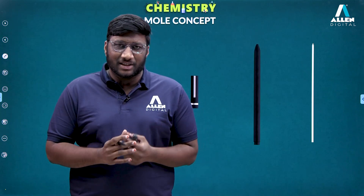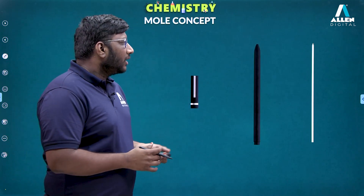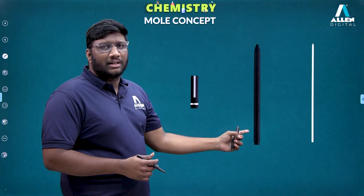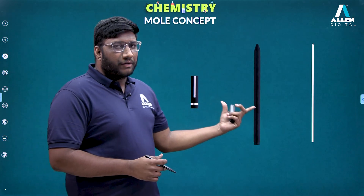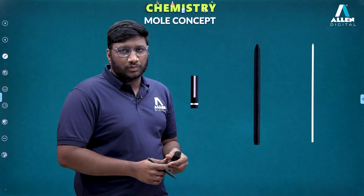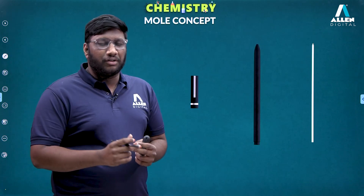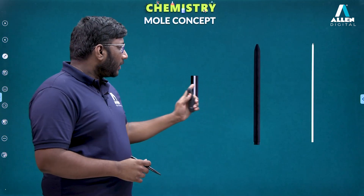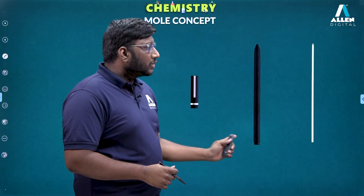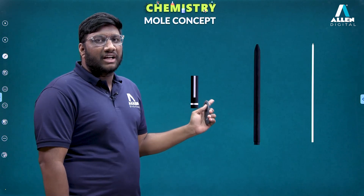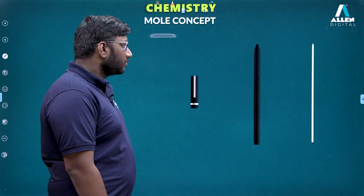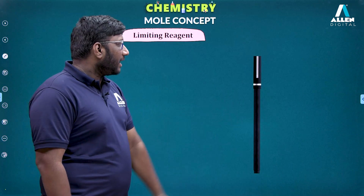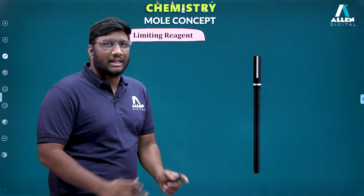To understand what limiting reagents are, we start with a simple example. We have one refill, one cap, and one outer container known as a barrel. If you start making a pen, we need one cap, one refill, and a barrel. So we can easily say with these three we can make one pen — just keep a refill and a cap inside the barrel and you get one pen.